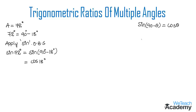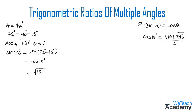We already discussed the value of cos 18 in our previous videos, which is cos 18 = √(10 + 2√5) / 4. Writing that value here, this will be the value for sine 72 degrees. Hence, sine 72 degrees = cos 18 degrees = √(10 + 2√5) / 4.